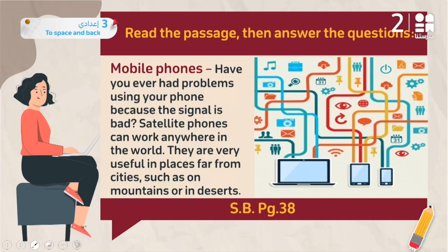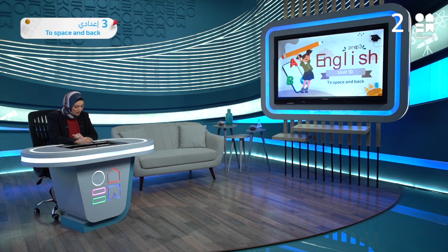Fourth use: mobile phones. Have you ever had problems using your phone because the signal is bad? Satellite phones can work anywhere in the world. They are very useful in places far from cities, like mountains and deserts.